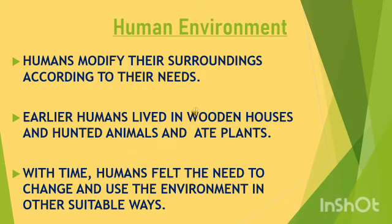The other main important domain of the environment is human environment. Human beings interact with the environment and modify it according to their needs. Earlier humans lived in wooden houses and hunted animals and ate plants. With changing times, humans felt the need to change the use of environment in other suitable ways. Human beings started growing crops, domesticating animals, and led a settled life. This is how with changing times and changing needs, humans modify their surroundings and change the environment according to their needs.